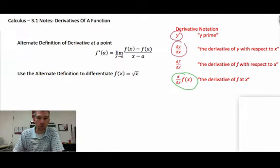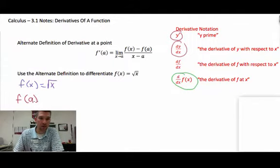So what we need, we need to know what f of x is. So back over here to differentiating, we need to know what f of x is, and that's going to be the square root of x. We also need to know what f of a is. Well, that's going to be the square root of a, because everywhere we see x, we put a in its place.